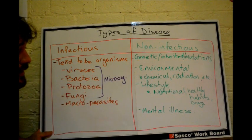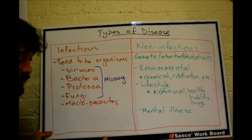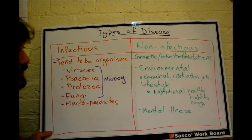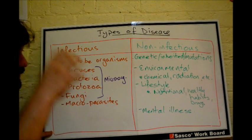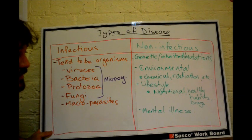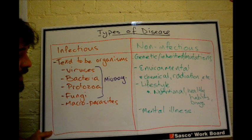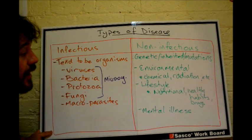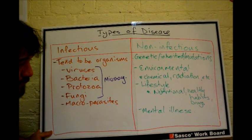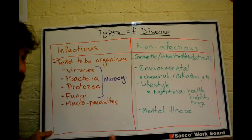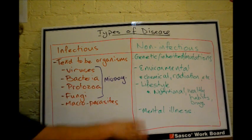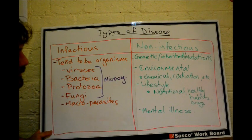Non-infectious diseases are actually a bit more complicated. You have genetics, which can be broken down into inherited conditions or mutations — either a mutation you're born with or one that develops during your life. There are environmental diseases caused by chemicals, radiation, and so forth. Then there's lifestyle, which can include nutrition, healthy habits, and drugs — there's some overlap between environmental and lifestyle. Finally, there's mental illness.